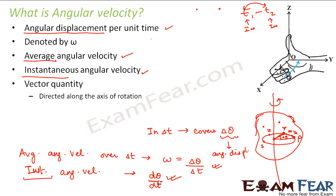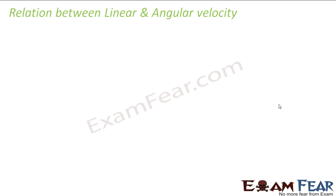Angular velocity is a vector quantity because it not only has a magnitude but also a direction. The direction of angular velocity is directed along the axis of rotation. Now let us look at the relationship between linear velocity and angular velocity.